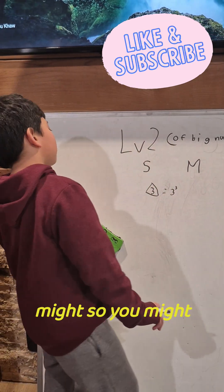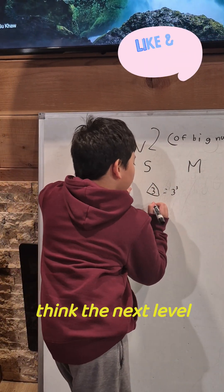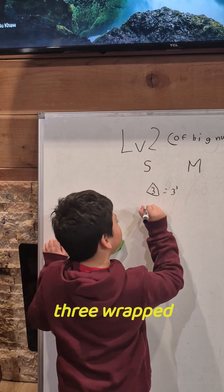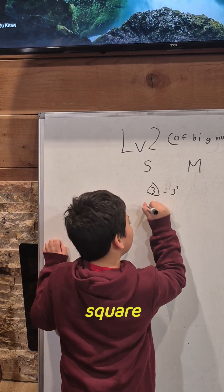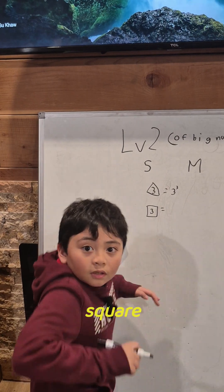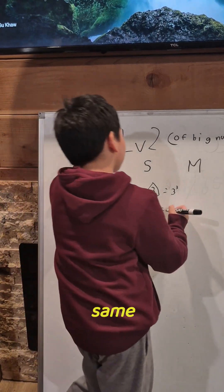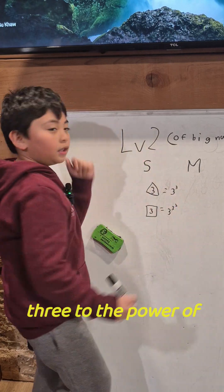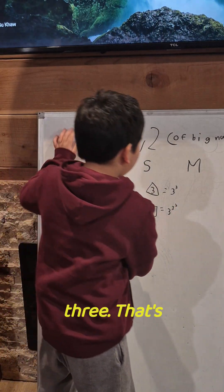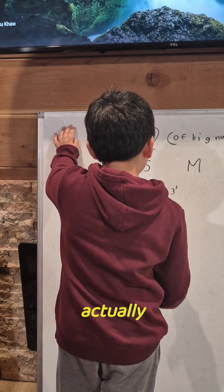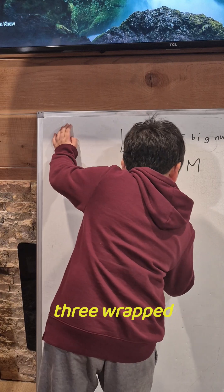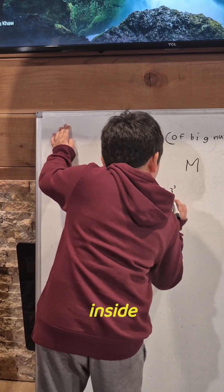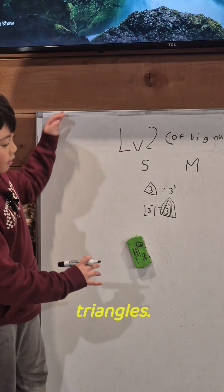You might think the next level up, which is 3 wrapped in a square, is the same as 3 to the power of 3 to the power of 3. But it's actually 3 wrapped inside 3 triangles.